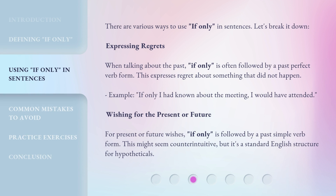There are various ways to use 'if only' in sentences. Let's break it down. Expressing regrets: when talking about the past, 'if only' is often followed by a past perfect verb form. This expresses regret about something that did not happen. Example: 'If only I had known about the meeting, I would have attended.'